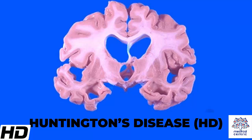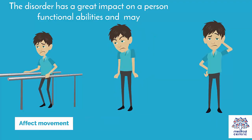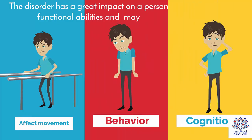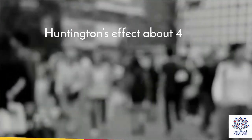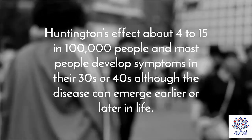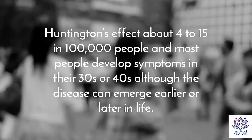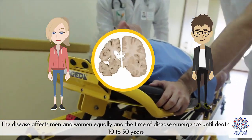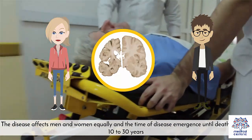Today's topic is Huntington's disease or HD. Huntington's disease is an incurable hereditary brain disorder that results in the progressive degeneration of the brain cells. The disorder has a great impact on a person's functional abilities and may affect movement, behavior, and cognition. Huntington's affects about 4 to 15 in 100,000 people, and most people develop symptoms in their 30s or 40s, although the disease can emerge earlier or later in life. The disease affects men and women equally, and the time from disease emergence until death is about 10 to 30 years.